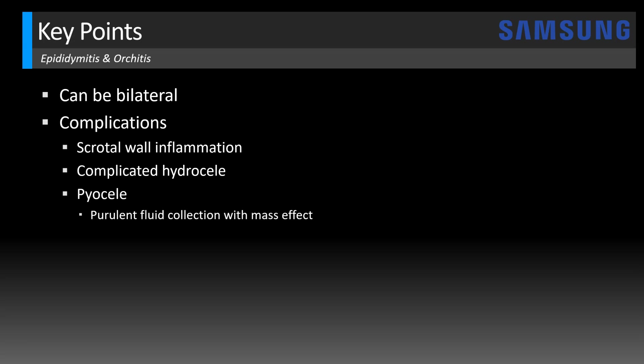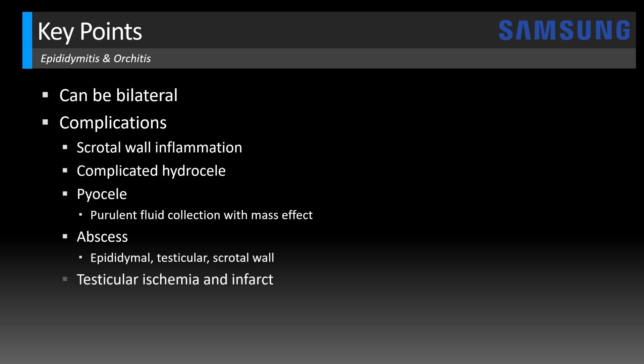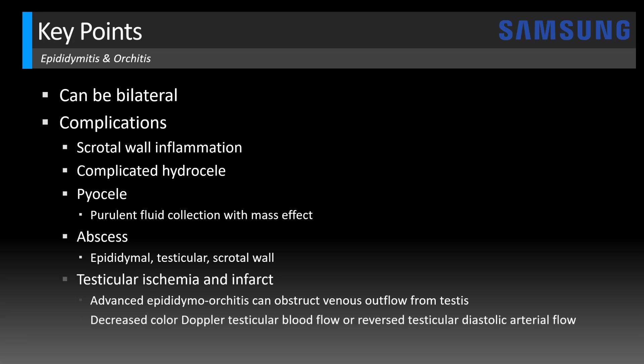Usually a complicated hydrocele won't have mass effect but a pyocele will, and a pyocele is more likely to need surgical drainage whereas a complicated hydrocele can often resolve with treatment. Abscess can also occur in the epididymis, testis, or scrotal wall. The most dreaded complication is testicular ischemia and infarct, occurring in the setting of advanced epididymal orchitis, which can lead to obstruction of venous outflow from the testis. On imaging you'd see decreased color Doppler testicular blood flow, and with spectral Doppler you might see reversed testicular diastolic arterial flow or complete absence of arterial flow if advanced.